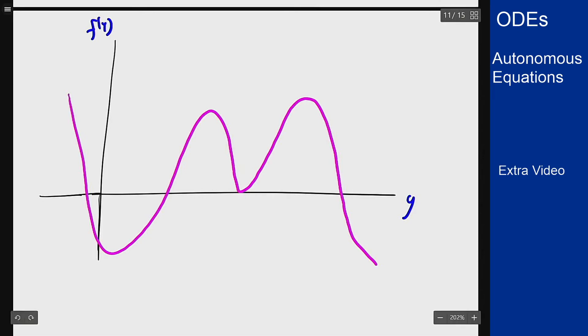Now say we look at some point that's in here. Well in here f of y is positive because the graph is above the axis, but we also have that f prime of y is positive because the slope here is positive. Therefore for this y value the graph will be concave up.